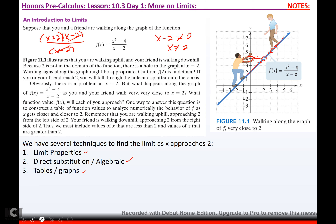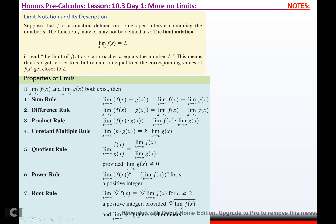First, let's talk about limit properties. Limit notation: suppose that f is a function defined on some open interval containing the number a. The function f may or may not be defined at a. The limit notation — the limit as x approaches a of f(x) equals some constant L — is read: the limit of f(x) as x approaches a equals L. This means that as x gets closer to a but remains unequal to a, the corresponding values of f(x) get closer and closer to L.